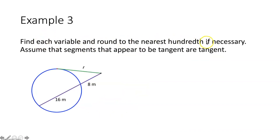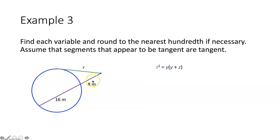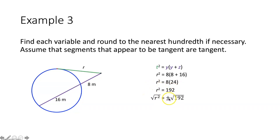Example three says find each variable and round to the nearest hundredth if necessary. Assume that segments that appear to be tangent are tangent. We have a circle with a tangent and a secant intersecting at a point outside the circle, and we need to find the length of the tangent R. Using the tangent and secant segments theorem: R squared equals 8 times the quantity 8 plus 16. Adding inside the parentheses gives 24, and 8 times 24 is 192. Taking the square root of both sides — since R must be positive — R is approximately equal to 13.86 meters.